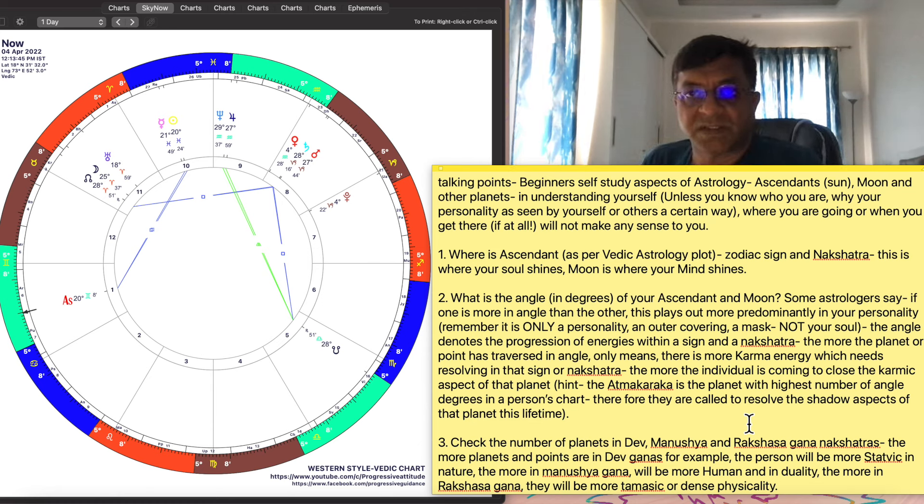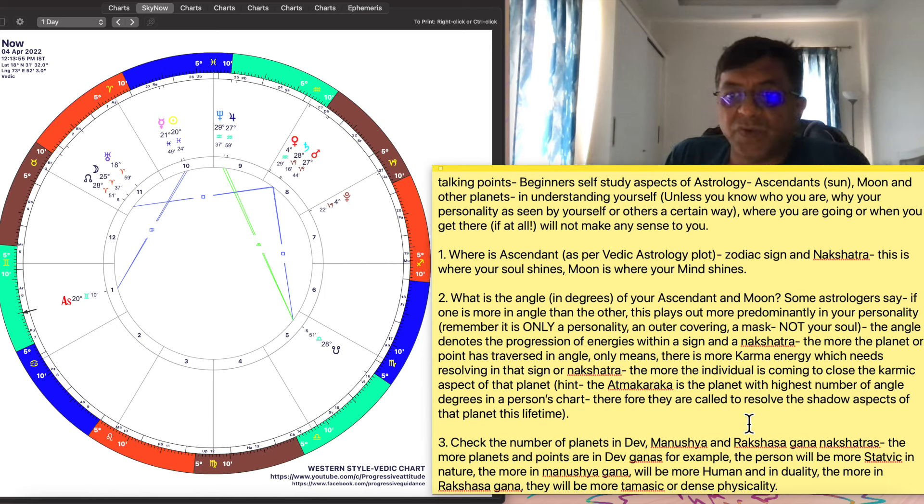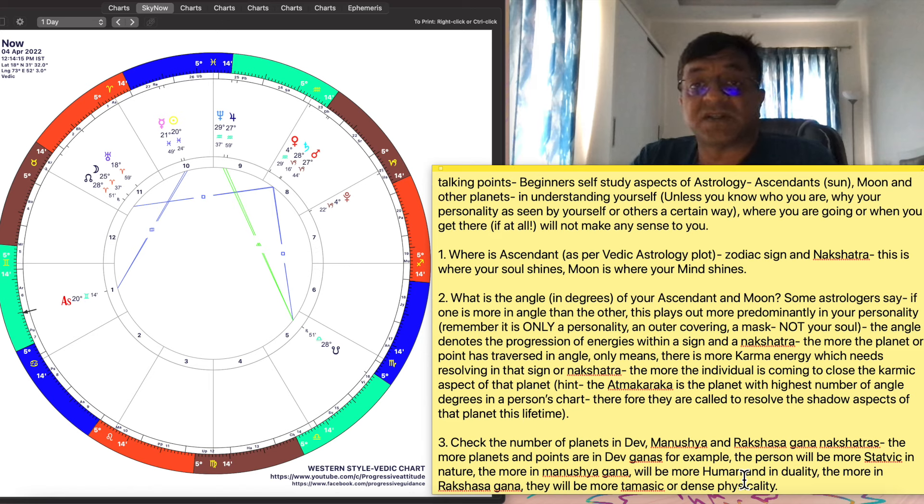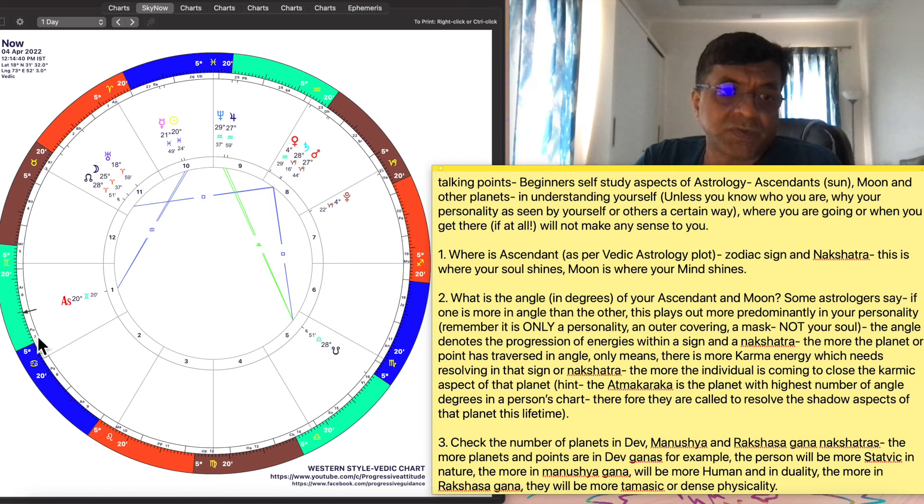Back to the talking points. Ascendant means where your sun shines and moon nakshatra is where your moon shines, the mind. The basis of this is unless you know who you are, why your personality is seen by yourself or others a certain way, where you are going or when you get there, if at all you get there, it will not make any sense to you. That's the principle of evolutionary astrology as I call it. The entire playlist of evolutionary astrology is all about first understanding you, who you are and where you are going and how your life transpires based on your personality. It's all based on personality. So number one, first point, where is your ascendant as per Vedic astrology?